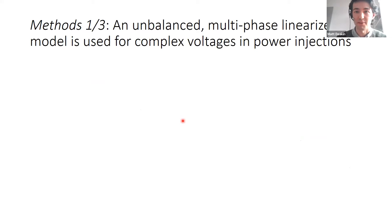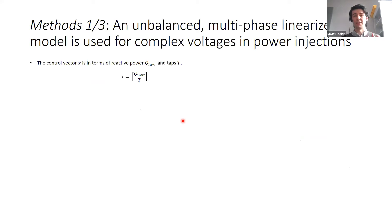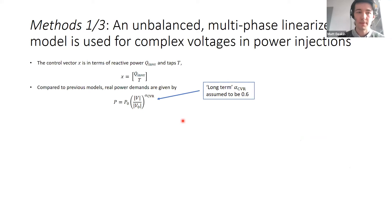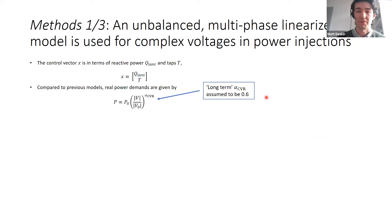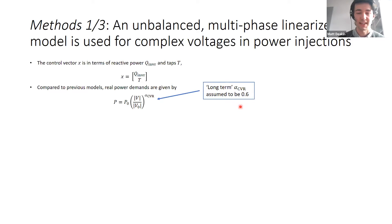We use one of these unbalanced multi-phase linearized models — there's a lot of work on this at the moment. Our control vector is in terms of reactive power and the tap turns ratio. Compared to most linearized models, we have voltage-dependent demand. This CVR coefficient we reckon might be about 0.6, which is perhaps a bit high, but what you might expect for a long-term value. For short-term transients, this value is higher because you have thermostatic impedance loads.